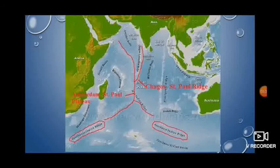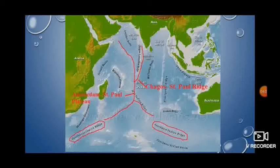Wherever the central ridge or its branches emerge above sea level, you can find islands. The main central ridge starts from the continental shelf of the southern tip of the Indian Peninsula with an average width of 320 kilometers. This part of the ridge is known as the Lakshadive-Chagos Ridge. The ridge further extends southward and widens near the equator, where it is called the Chagos-Saint-Paul Ridge. Between the equator and 30 degrees south latitude, the average width of the Indian Ocean ridge is 320 kilometers.